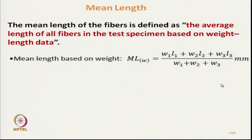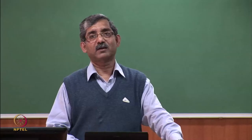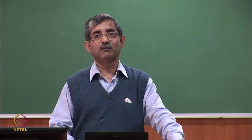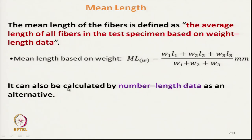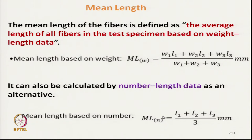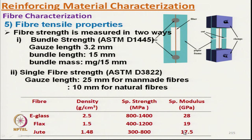Weight-based mean length is important for composite manufacturing because the fiber volume fraction or weight fraction is based on the total mass of fiber present. Mean length can also be measured on a number basis for different numbers of fibers. Fiber tensile properties can also be measured by bundle strength, particularly for short or very short fibers.